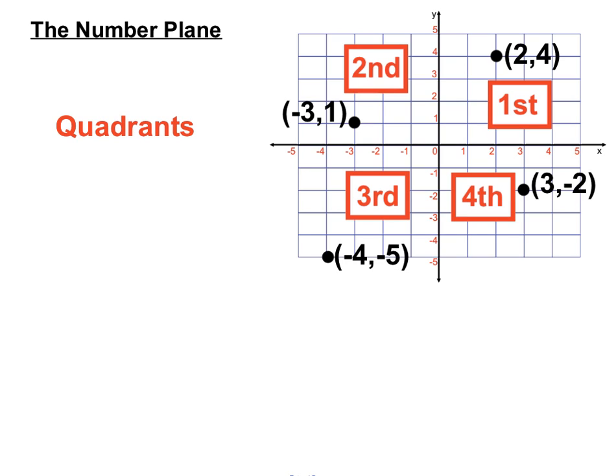And the fourth quadrant is a combination of a positive x value and a negative y value. So depending on the different numbers we've got in our ordered pairs, we might find ourselves in the first, second, third, or fourth quadrants.